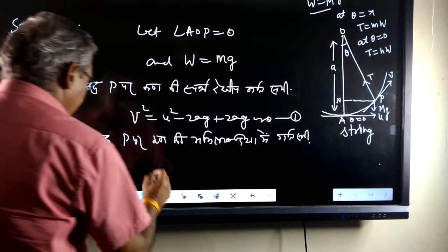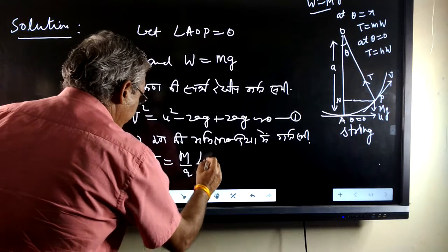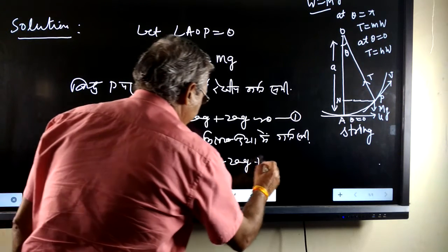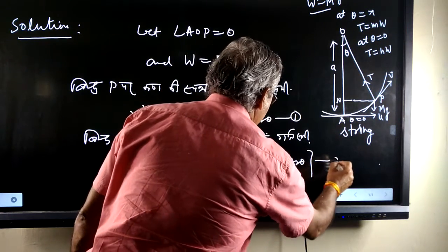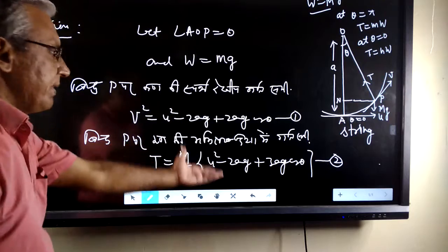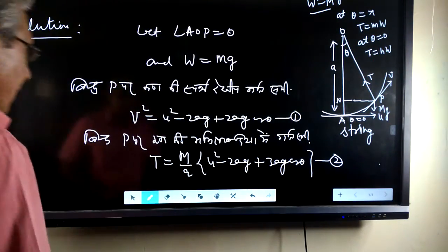Which is T equals to m by a times u square minus 2ag plus 3ag cos theta. These are two equations we have derived from first.